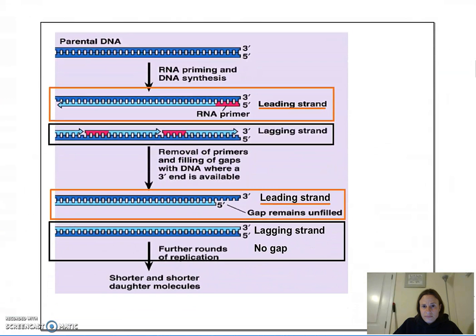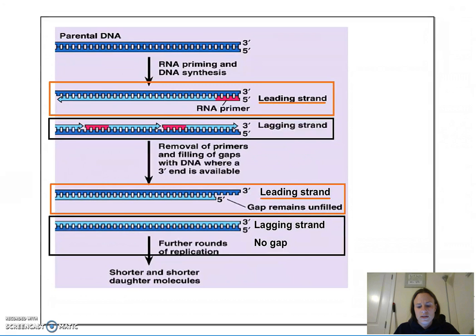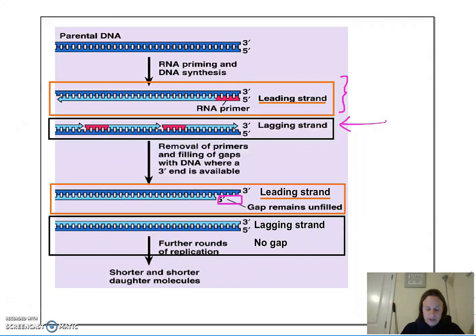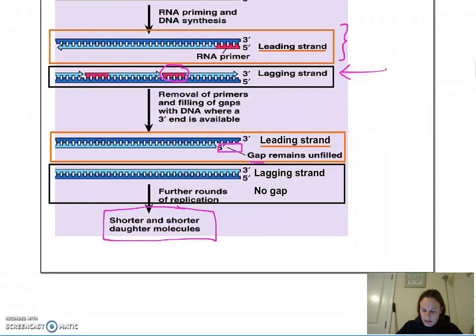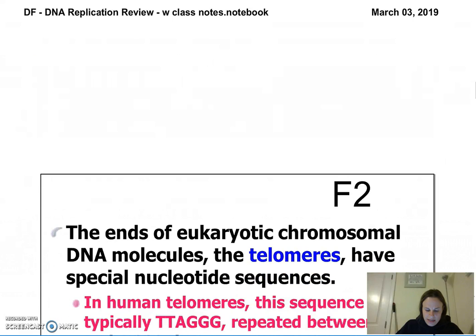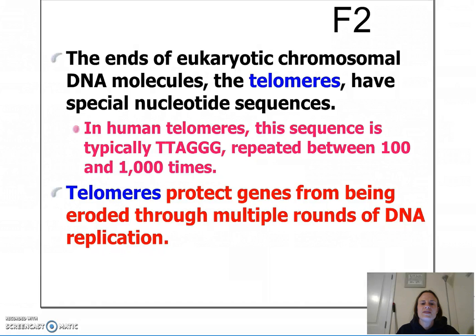Even though there is only one error per billion nucleotides, within the leading strand we're going to have a gap that remains unfilled. In the lagging strand, we don't run into that issue — the gap is always filled. But with the leading strand, through repeated rounds of replication, we end up with shorter and shorter daughter molecules. Fortunately, at the end of our eukaryotic chromosomal DNA molecules, we have telomeres, which don't code for anything but act as protection that prevents genes from being eroded through multiple rounds of DNA replication.